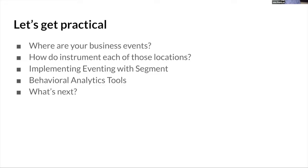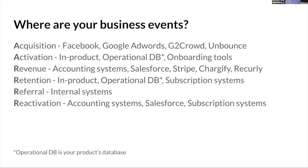Getting practical: where are your events? Social media, Unbounce, landing pages. Activation events are oftentimes in your operational database — the same database tracking everything else in your product. Onboarding tools. Revenue gets more interesting: Stripe, Chargify, Recurly, Salesforce — all these systems now have APIs, so it's easy to get data out of them. A lot of these systems already have events coming out with integrations into other systems. Retention is probably one of the most difficult to get — just trying to figure out if your customers are still using you. But the first half of that funnel is pretty easy, and there are a lot of turnkey solutions for getting these events out.